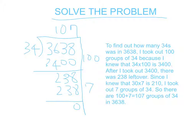To find out how many 34's were in 3,638, I took out 100 groups of 34 because I knew that 34 times 100 was 3,400. After I took out 3,400, there was 238 left over. Since I knew that 30 times 7 was 210, I took out 7 groups of 34.